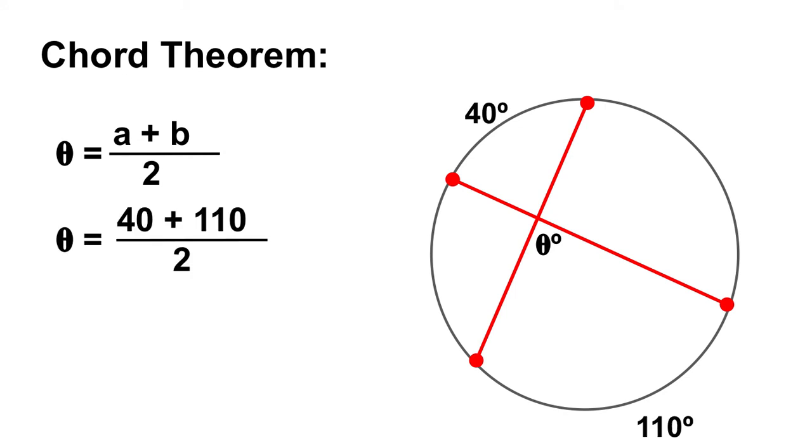So if we look at this specific example, now we know how big these two arcs are. We've got this arc here that's 40 degrees and then we've got this other arc here that's 110 degrees. So all we need to do is add those two arcs together and then divide by two. So 40 plus 110 is 150, and if we divide that by two, we're going to get our answer of 75 degrees.